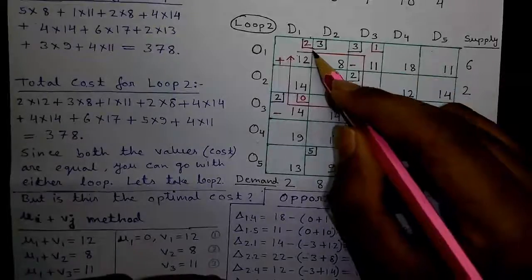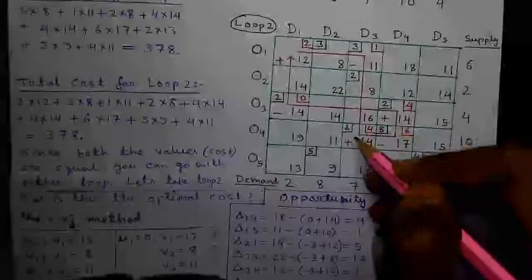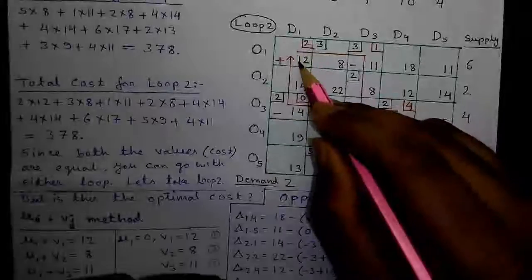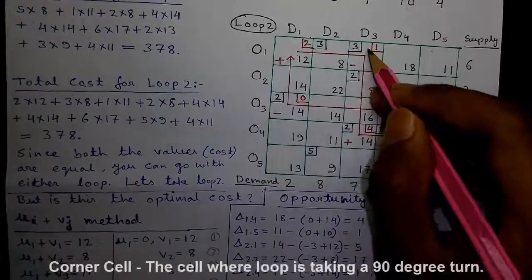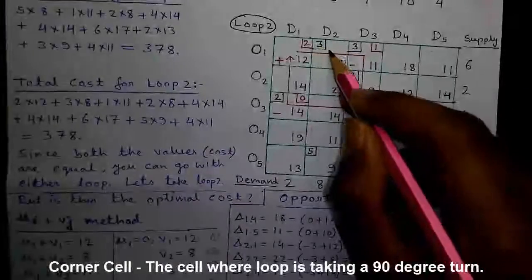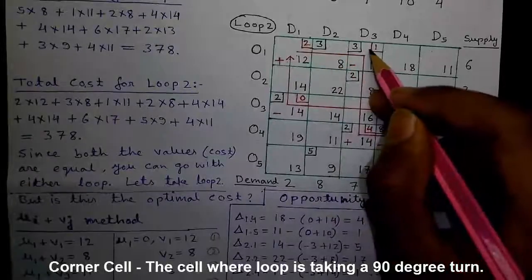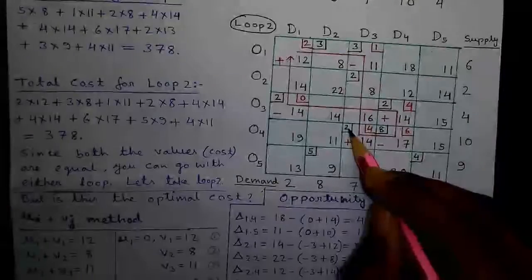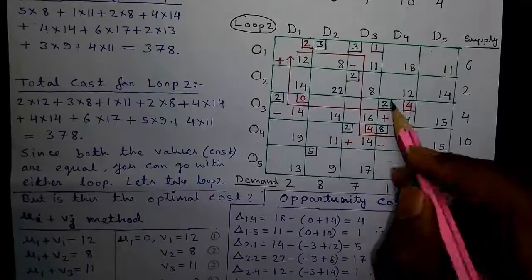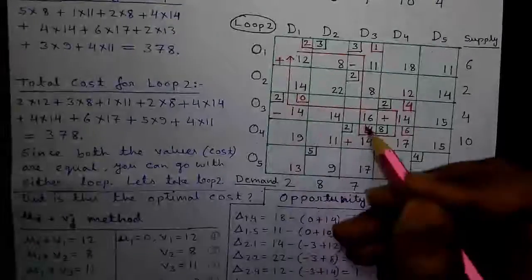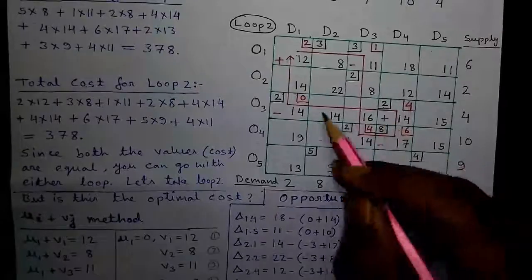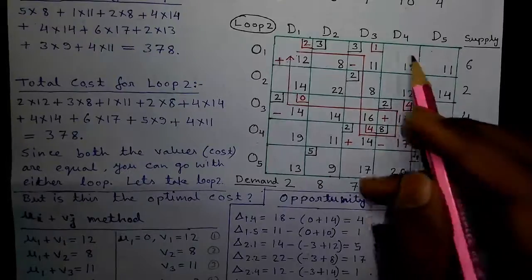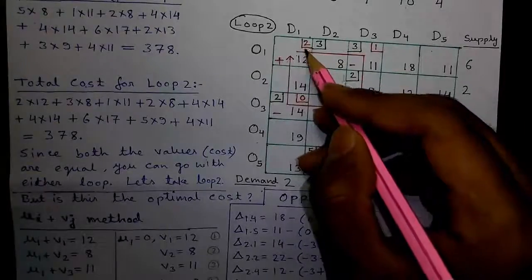Next we will find out the smallest allocation value among all the corner points of the loop. Starting from the unallocated cell, the first corner cell has an allocation value of 3; going downward, the next corner value is 2; then 8; then 2; and then 2. Among all the corner allocation values in the path of the loop, the smallest value is 2. We will take that value to allocate at the starting cell — there is 2 here at the next cell.